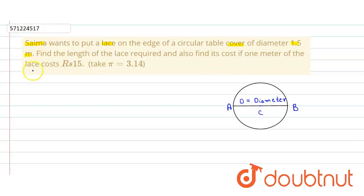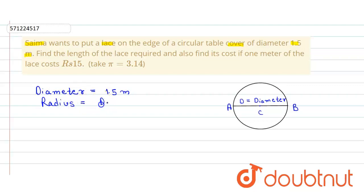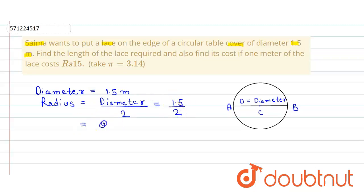It is given that the diameter is equal to 1.5 meters. So the radius will be equal to half of the diameter — that is, diameter divided by 2 — which equals 1.5 divided by 2, giving us 0.75 meters.